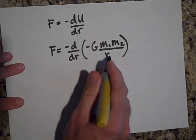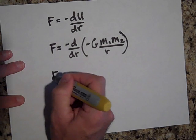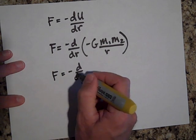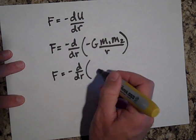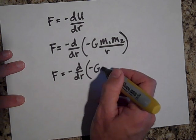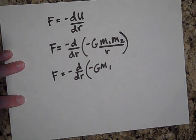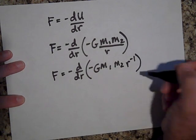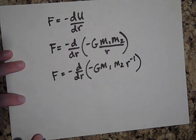However, let me rewrite this so the R is on top. It'll be easier for you to see. So it's negative derivative with respect to R of, and I'm going to write this as negative G M1 M2 times R to the negative 1. Let's take its derivative.